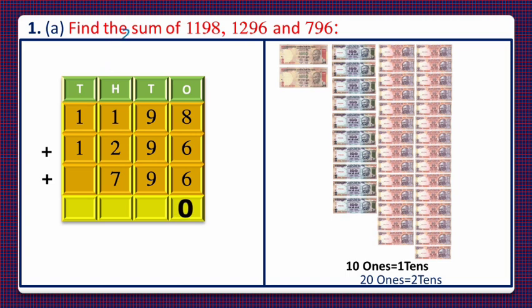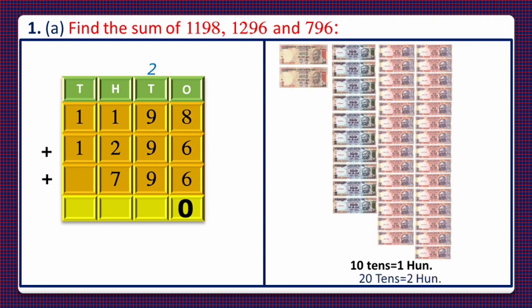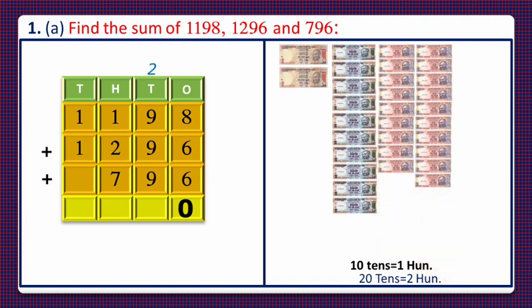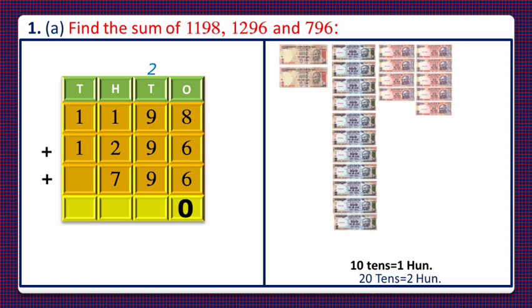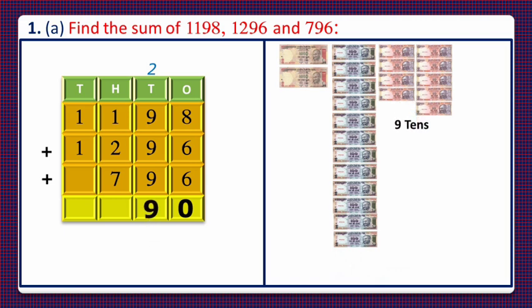Now, dear students, the number of tens is 29. Since 10 tens equals 100, and 20 tens equals 200, we'll take away 20 tens and replace them with 200. We're left with 9 tens, which we'll write in the tens column, and carry 2 to the hundreds column.